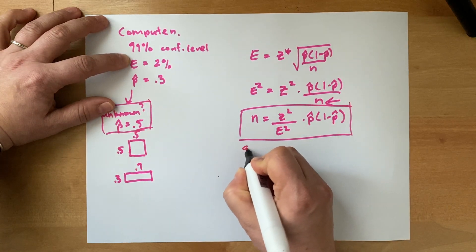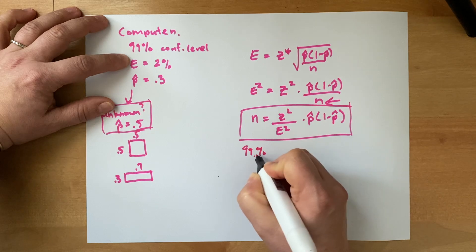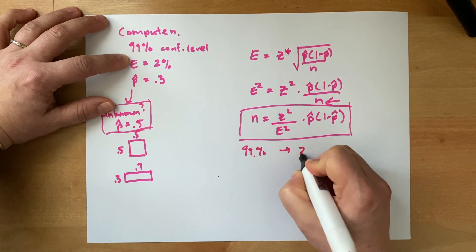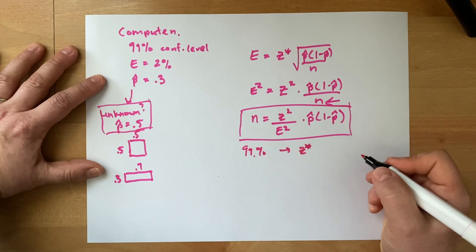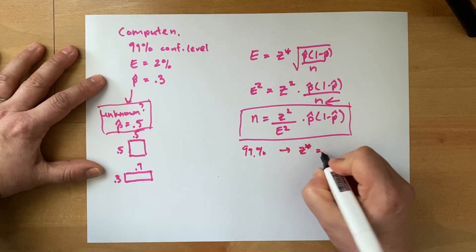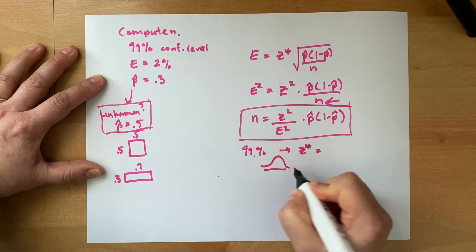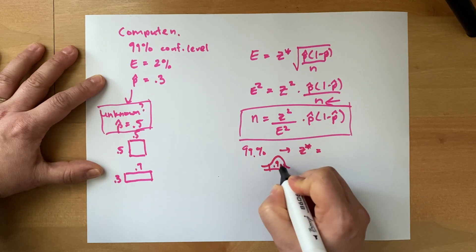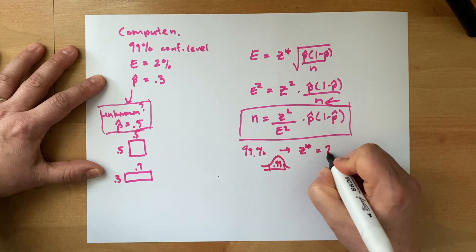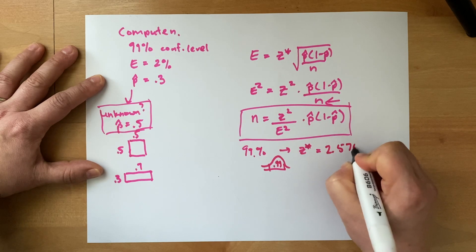All right, so I'm going to use these facts: 99% confidence level. That means that our z star value, or z value, or z score, so the z score that puts 99% area in the middle of a distribution like that, 0.99 is 2.576.